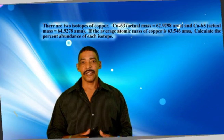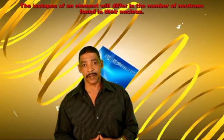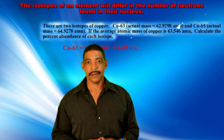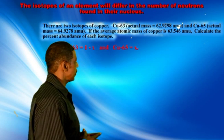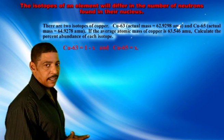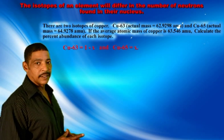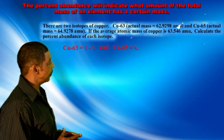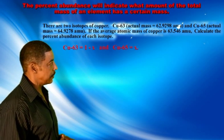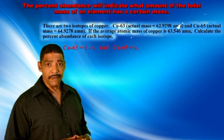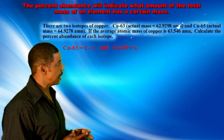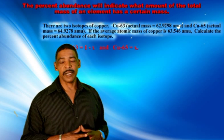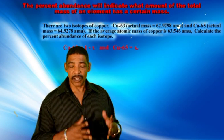The percent abundance of each isotope of copper may be calculated algebraically. Suppose we let the fractional abundance of copper-63 equal (1 minus x), and the fractional abundance of copper-65 equal x.